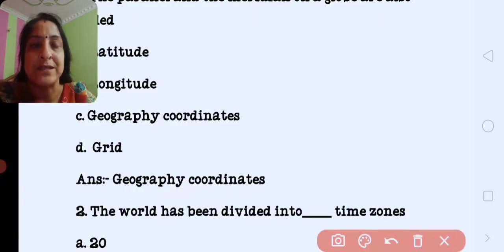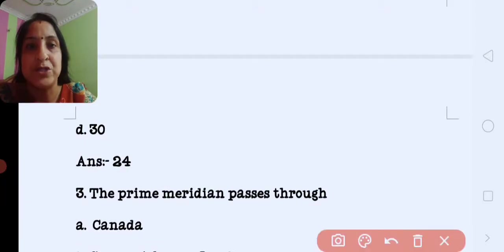Next is the world has been divided into dash time zones. How many time zones have we divided the whole world? The correct answer is 24 time zones.